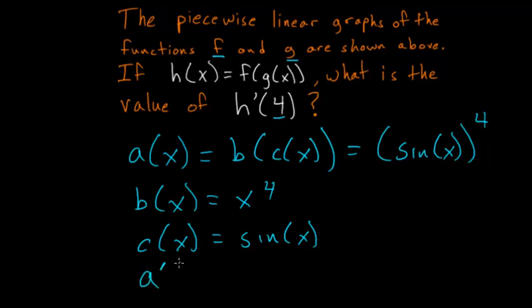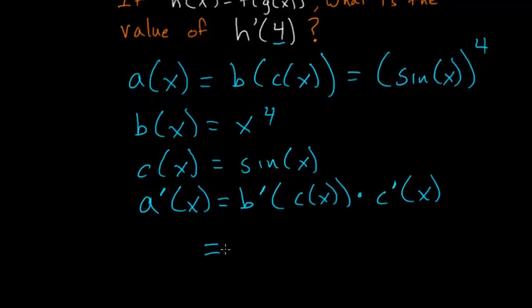The derivative of a(x), you first take the derivative of the outer function with the inner function still inside it, and then you multiply it by the derivative of the inner function. So for our case, a'(x) is equal to the derivative of the outer function. So we bring the 4 down in front, and we subtract the exponent by 1, and the inner function will just stay inside of it.